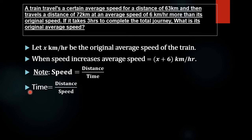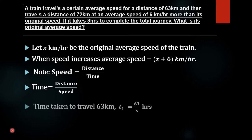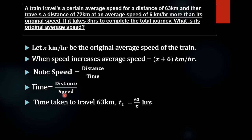We will make a connection between the two parts of the journey using time, because it is given that 3 hours is taken to complete the total journey. The time taken to travel 63 km is given by distance divided by speed: the distance is 63 km and the speed is x km per hour, so it is 63 divided by x hours. We will name it T1.